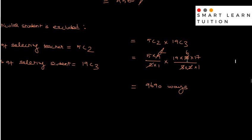19C3 equals 19 into 18 into 17 divided by 3 into 2 into 1. Simplify: 2s cancel, giving 5 into 19 into 6 into 17. Multiply them all — the answer is 9690. So that is the number of ways the committee can be formed.